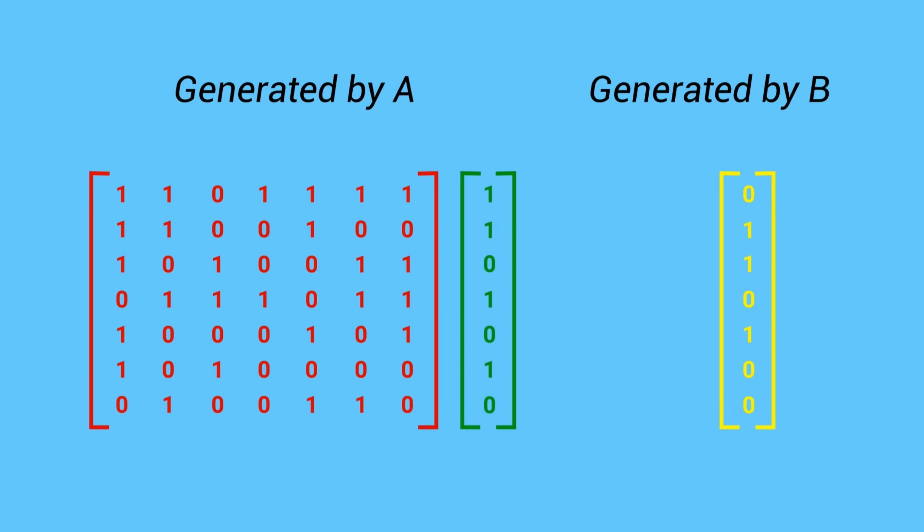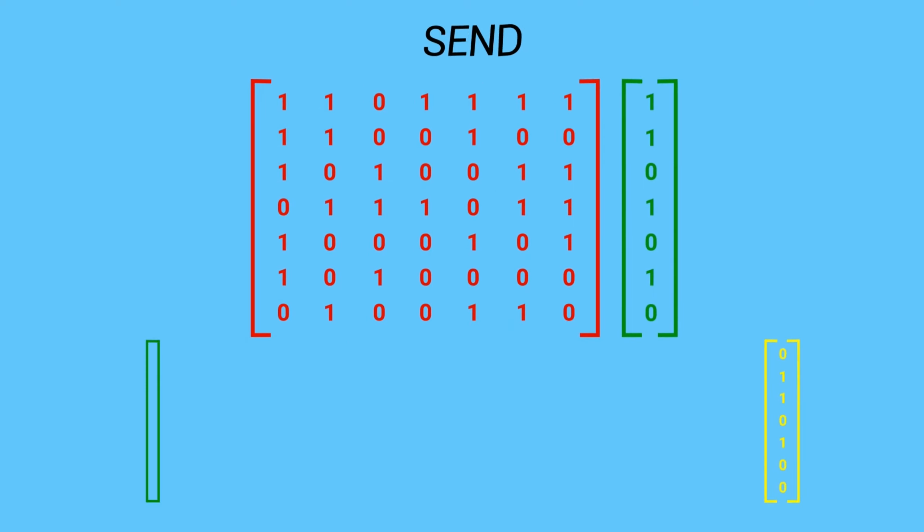In an encryption setting, this corresponds to A constructs a secret vector and a public matrix. He then sends the matrix along with the result vector of his, obtained by AND between secret vector and matrix, then horizontal XOR out to the right.